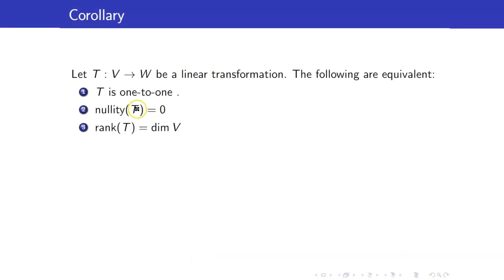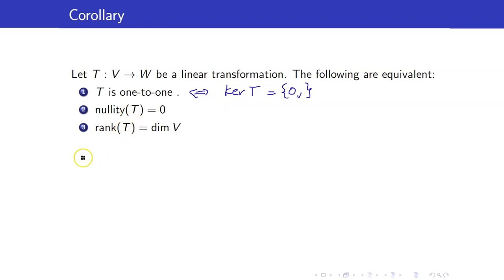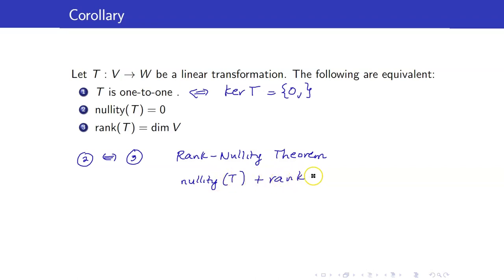Here is an immediate corollary of the previous theorem. The following are equivalent: T is 1-to-1 if and only if the nullity of T is equal to zero, and the rank of T is equal to the dimension of V. The kernel of T being just the zero vector is equivalent to the nullity of T being zero. By the rank-nullity theorem, nullity of T plus rank of T equals the dimension of V. So if the nullity of T is zero, the rank of T must equal the dimension of V.